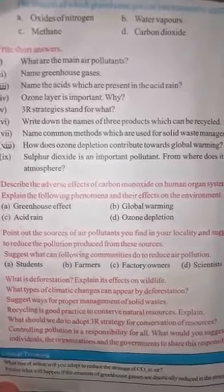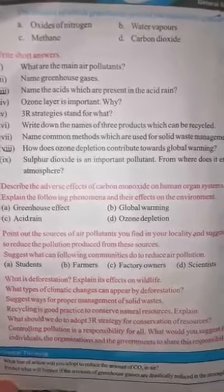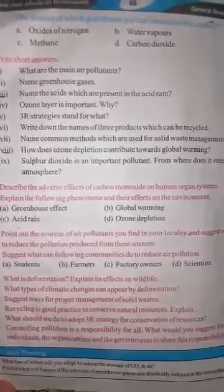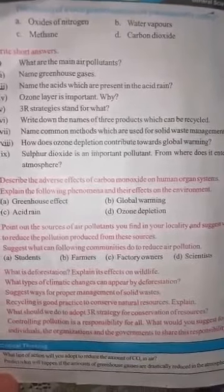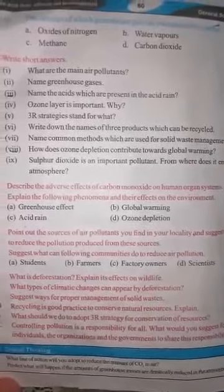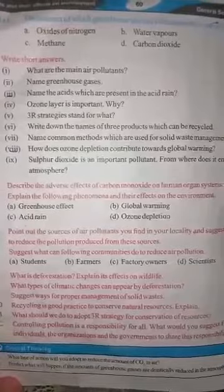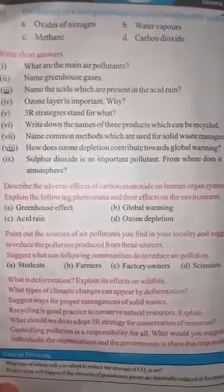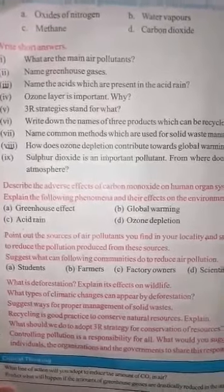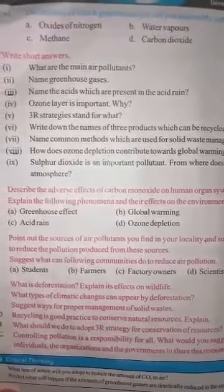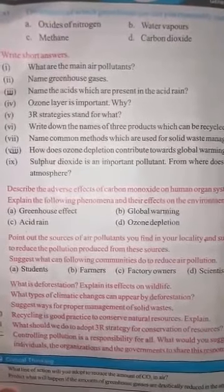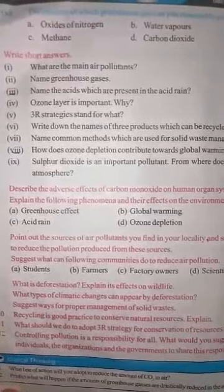Factory owners can make safe disposal of waste material and control the emission of gases. They can reduce the amount of gas expelled into the air by taking preventive measures. Factory owners must obey the rules set up by the government regarding safe disposal and other factors.